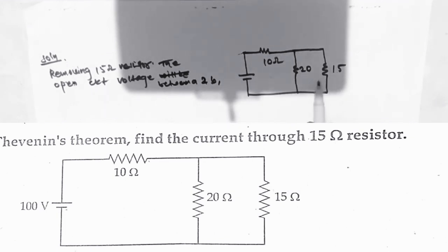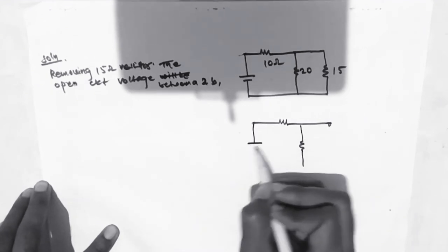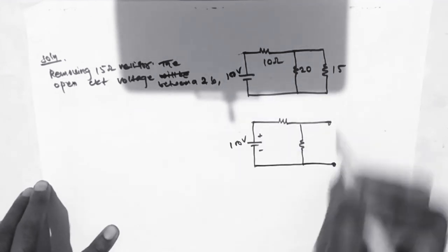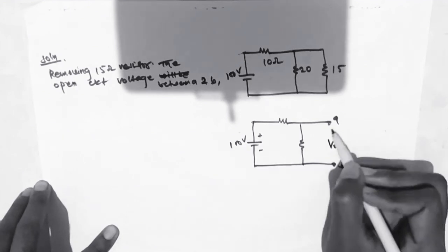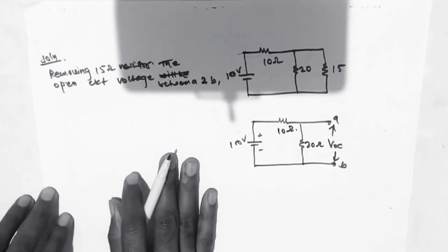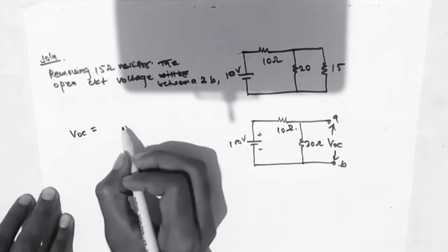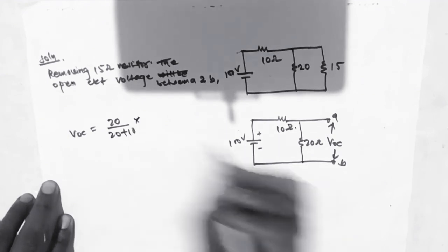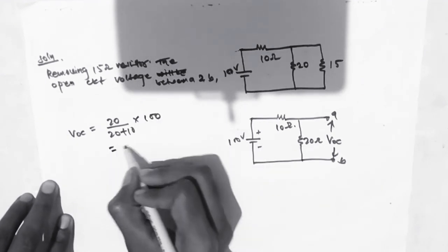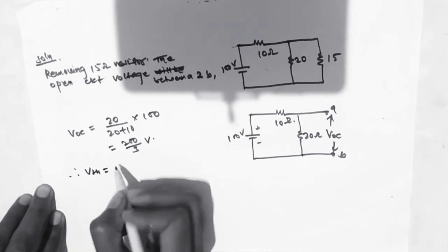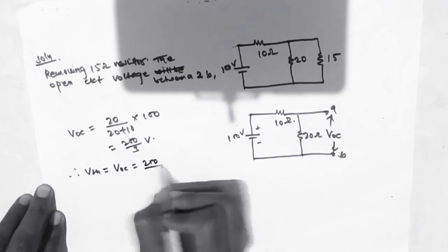If we remove the 15 ohm resistor, our circuit will have 100 volt source with 20 ohm and 10 ohm resistors. The open circuit voltage VOC between A and B is calculated using the voltage divider rule: VOC equals 20 upon (20 plus 10) into 100 volt. On calculating, we get 200 upon 3 volts. So Thevenin's equivalent voltage VTS equals VOC, which is 200/3 volts.